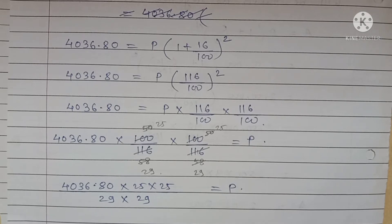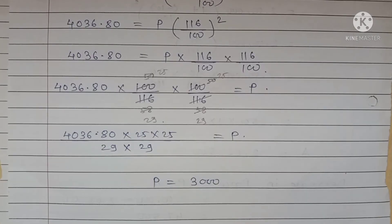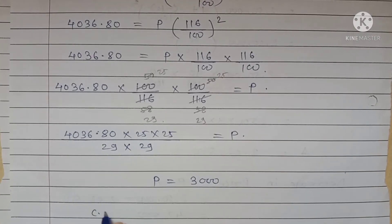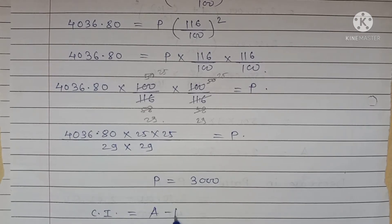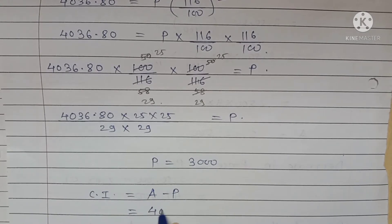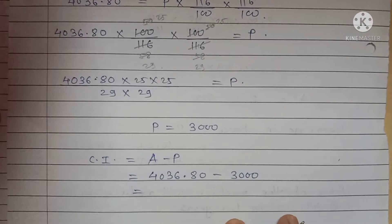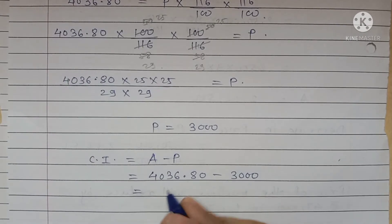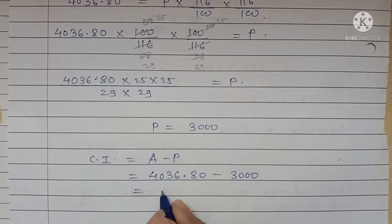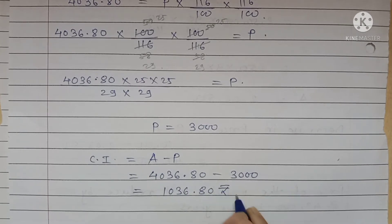Then you will get the answer 3000. P is equal to 3000. Now you can find out the compound interest. Formula of compound interest is equal to A minus P. A is 4036.80 minus 3000 means your answer is 1036.80 rupees.